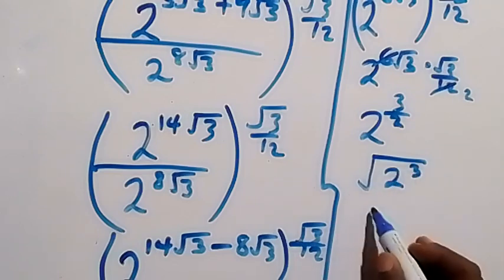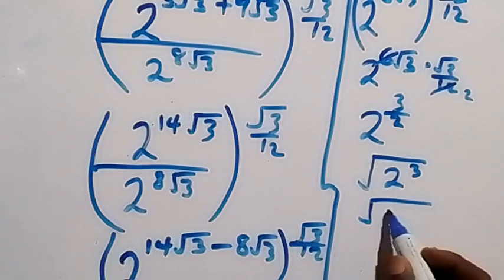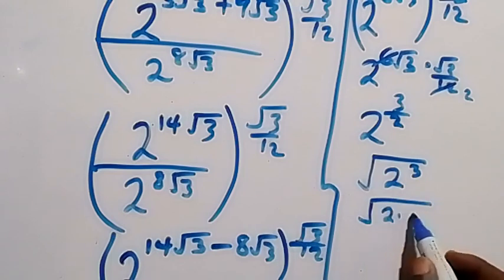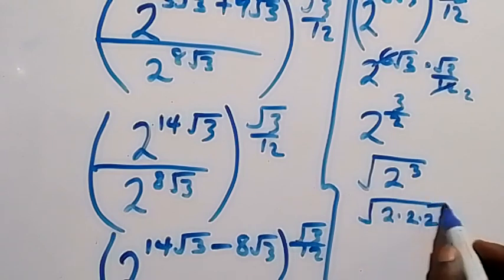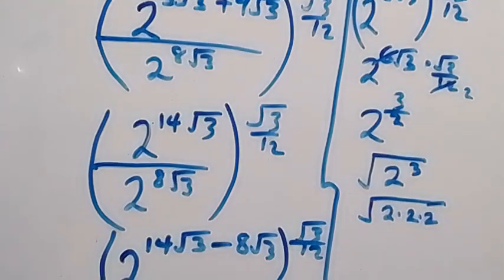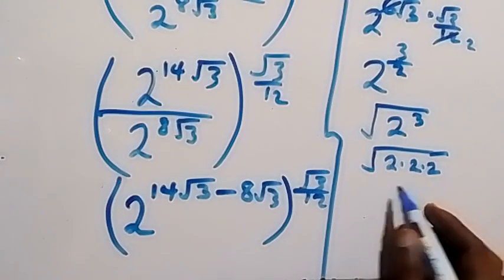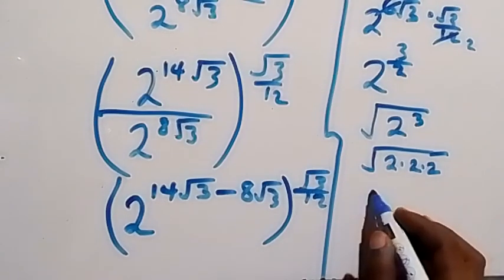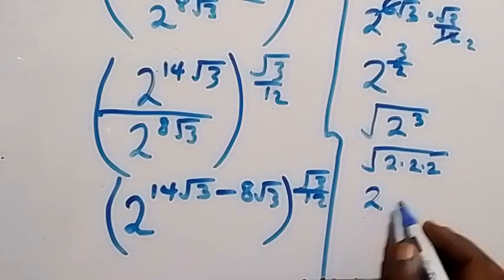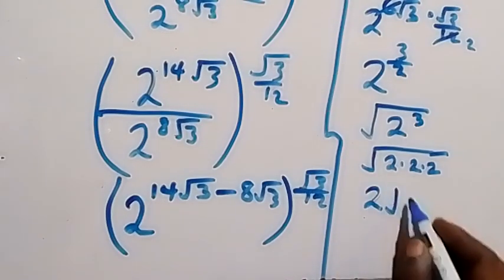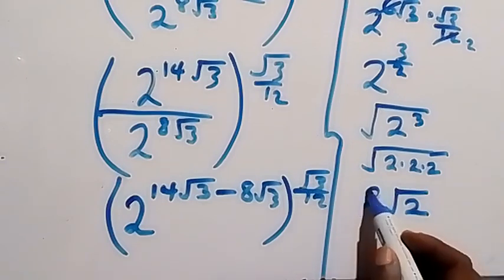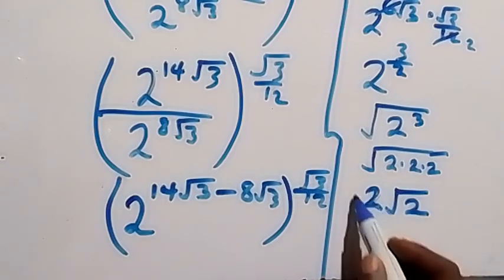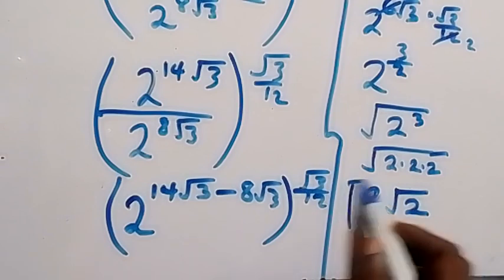This can be written as square root of 2 times 2 times 2, which is the same as square root of 4 times 2. Root 4 is 2, so we have 2 times root 2. The final answer is 2 root 2.